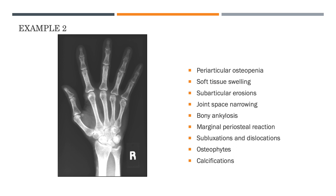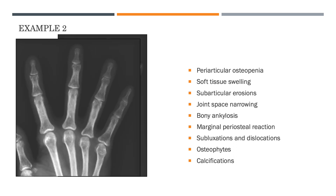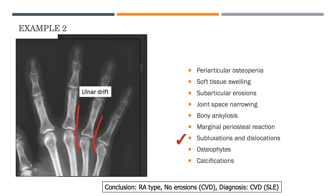In this next case, you might not notice anything initially. Looking more carefully, we see ulnar drift - ulnar deviation at the metacarpophalangeal joints - indicating early subluxations. There are no erosions, so you might see this in early rheumatoid arthritis, but this patient actually turned out to have SLE. Early subluxations without erosions are a feature seen in inflammatory arthritis of the collagen vascular disease type.